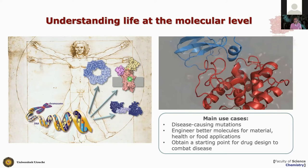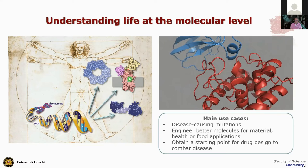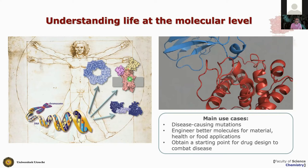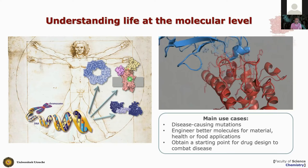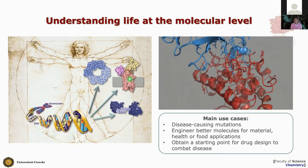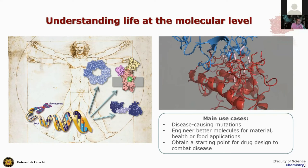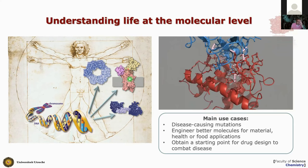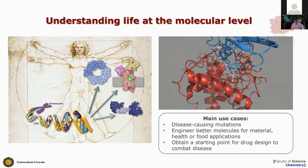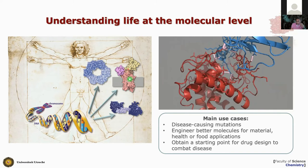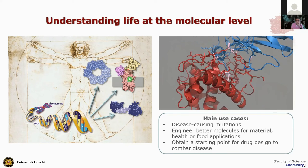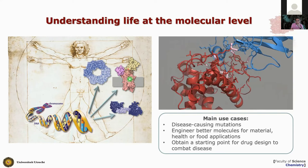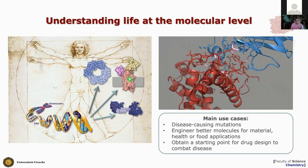Changes in structure, but also changes in the network of interactions, can be the origin of disease. Simple mutations can distort this network. You might want to engineer molecules to create better materials or food applications. And of course, drug design — which is one of the topics of today. To do structure-based drug design, you need access to structure, and if you want to model interactions with drugs.